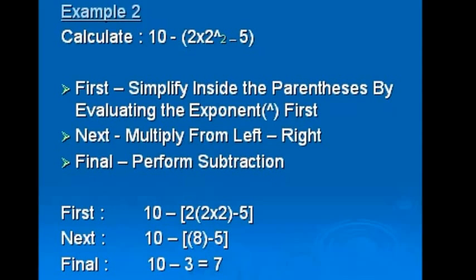In example 2, if we're also calculating 10 minus, open bracket, 2 times 2 to the exponent of 2 minus 5, close bracket, we first simplify what's inside the parenthesis by evaluating the exponent first. Next, we'll multiply from left to right, and then finally we'll perform a subtraction. So in this case, it would be 10 minus 2 times 2 times 2 minus 5. Next, it would be 10 minus 8 minus 5. The final answer would be 10 minus 3, which gives us 7.